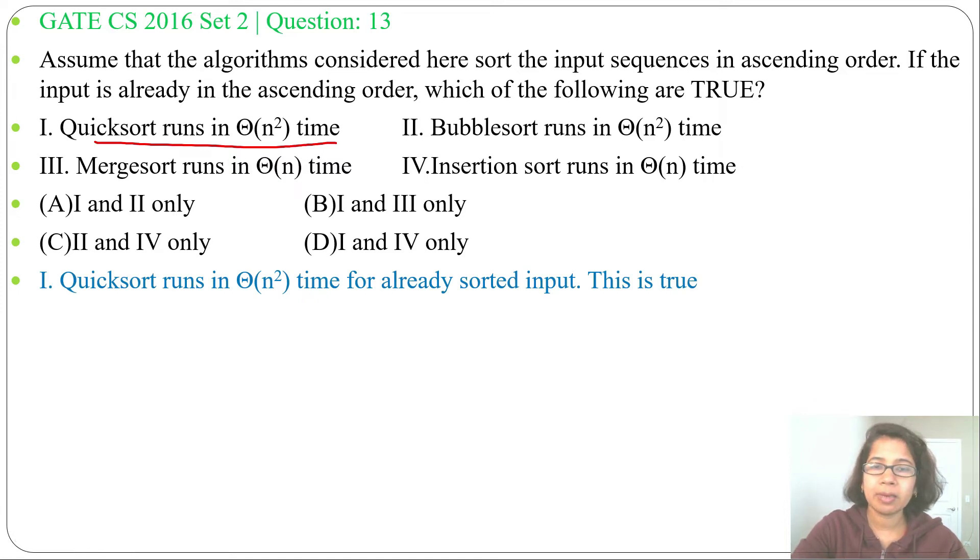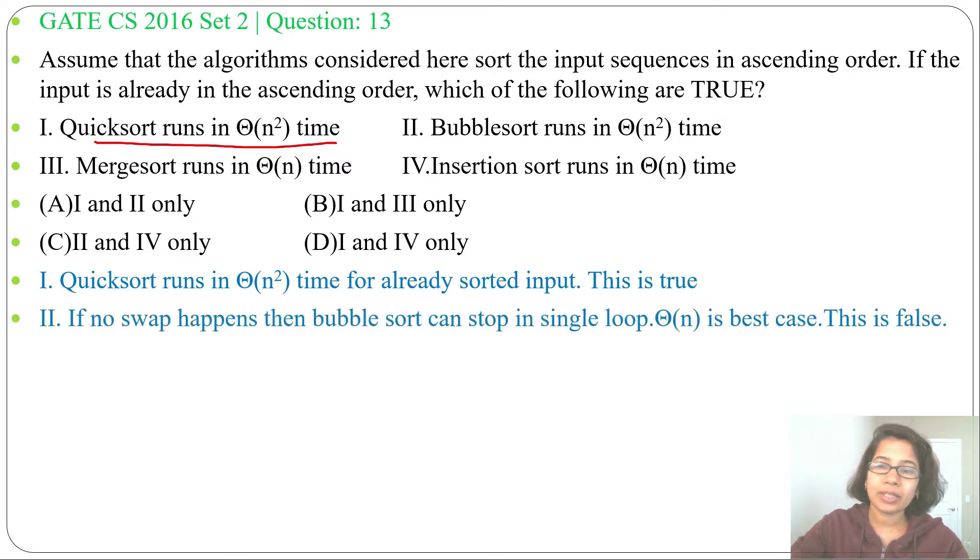Next, second statement: Bubblesort runs in Theta of n² time. Actually, if it is already sorted, in first pass it will be sorted. It will take just Theta of n in best case. So second statement is false.